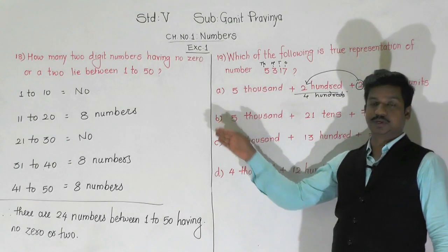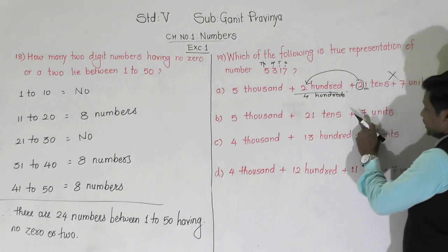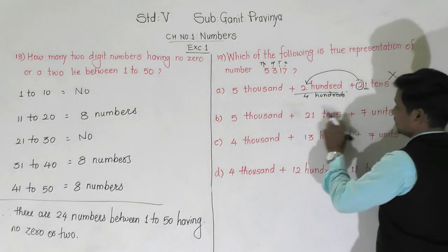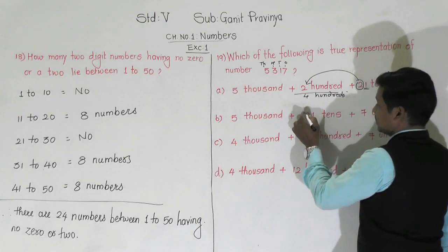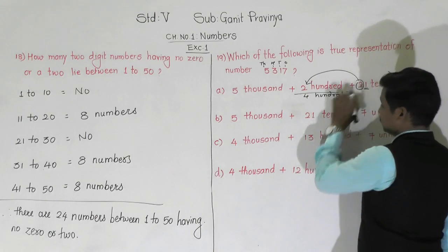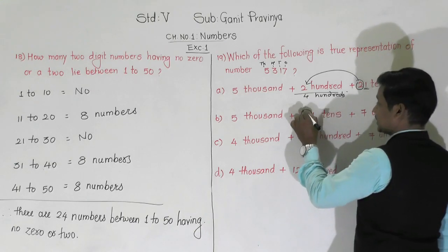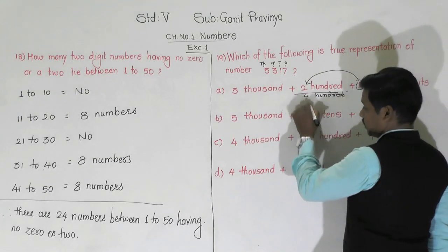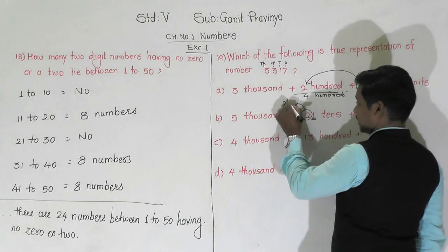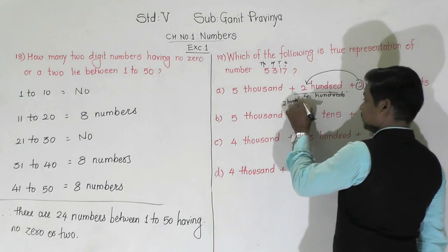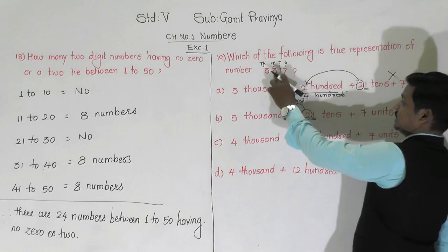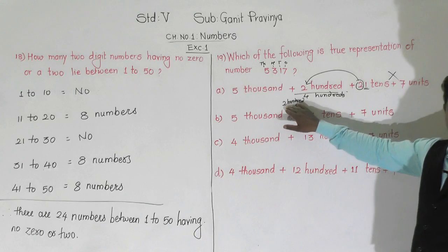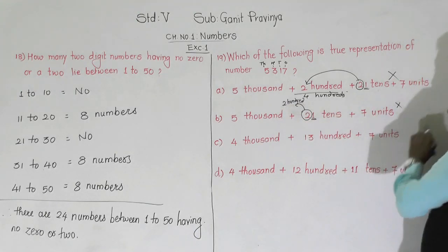Option B: again there is 7 units — correct. And 21 tens: 1 remains at tens, 2 carries to hundreds. But the hundreds place has 0 here, so it becomes only 200. However the original number has 300. So option B is also cancelled.